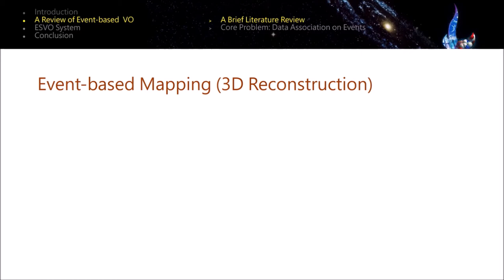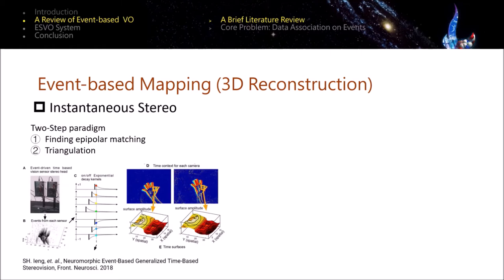Event-based mapping refers to recovering depth information from event streams. Existing methods can be classified into two categories. The first one is called instantaneous stereo method, which typically applies a pair of event-based cameras that have been calibrated extrinsically and synchronized temporally.